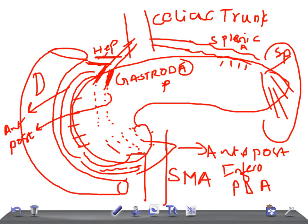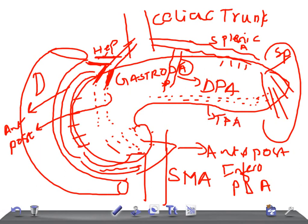There is a small branch that arises from the splenic artery known as the dorsal pancreatic artery, which runs behind the pancreas. Small branches from the dorsal pancreatic artery connect to the caudal part of the splenic artery posteriorly. These are called the transverse pancreatic arteries.